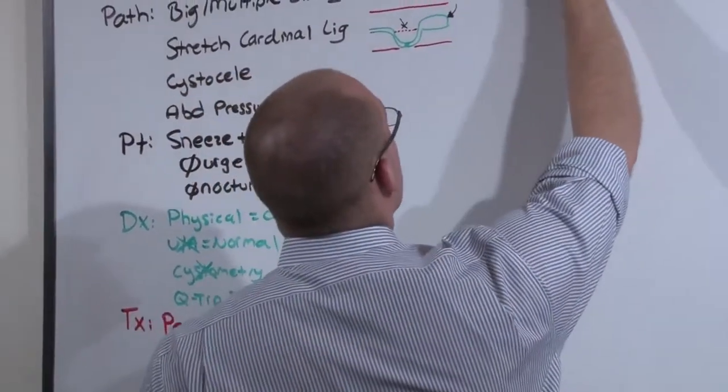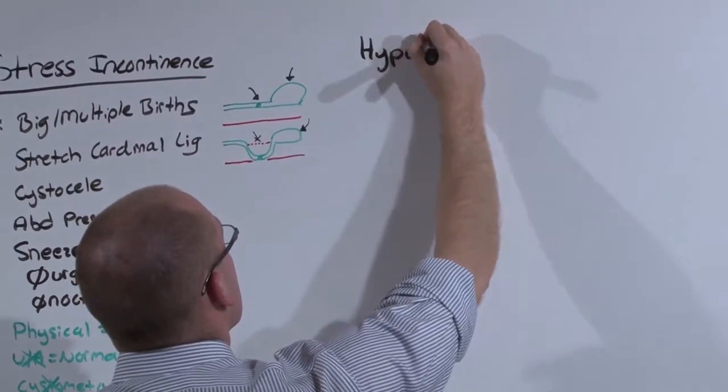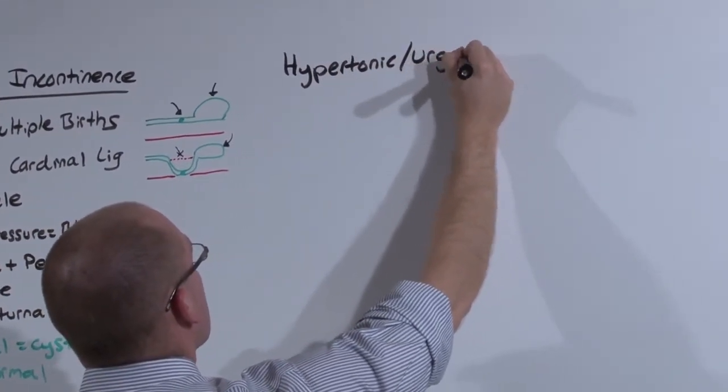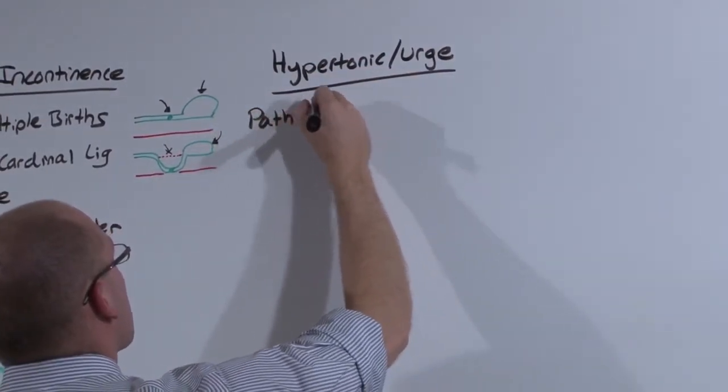The next one we're going to talk about is hypertonic, also called motor urge. The pathology is based on a spasmodic bladder.